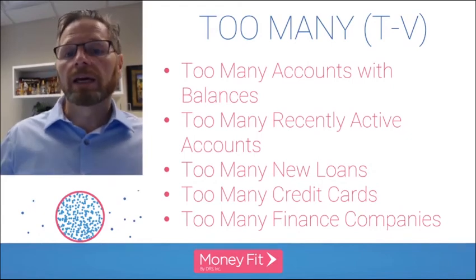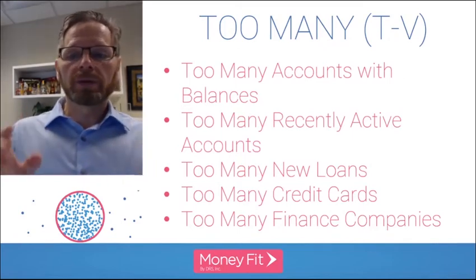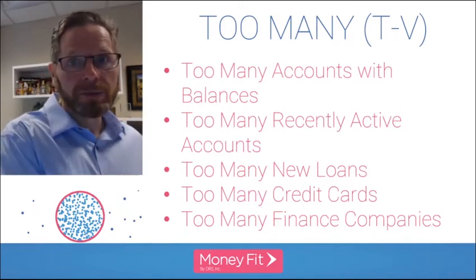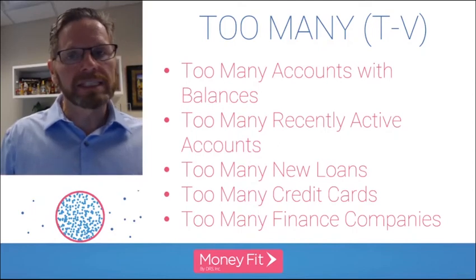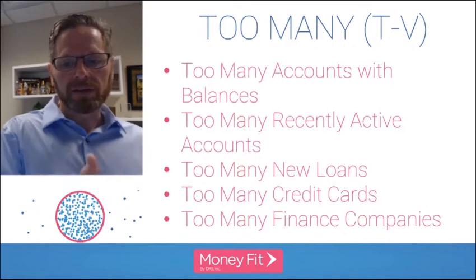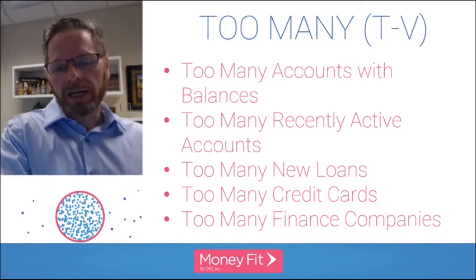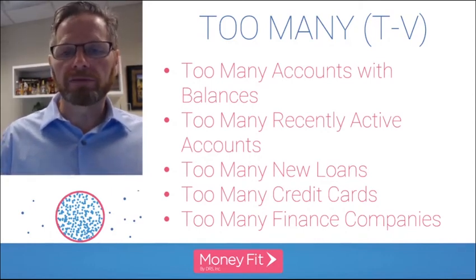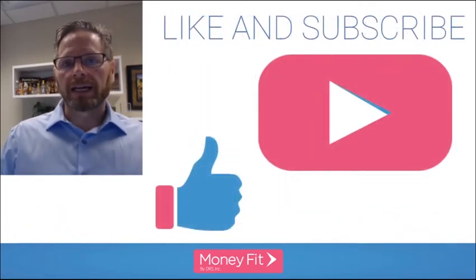Codes T and V cover 'too many' — too many accounts with balances, too many recently active accounts, too many new loans, too many credit cards, too many finance company accounts. There's a Goldilocks zone they don't clearly define, but having too few accounts and too many accounts both hurt your credit score. These can all generate a negative mark.